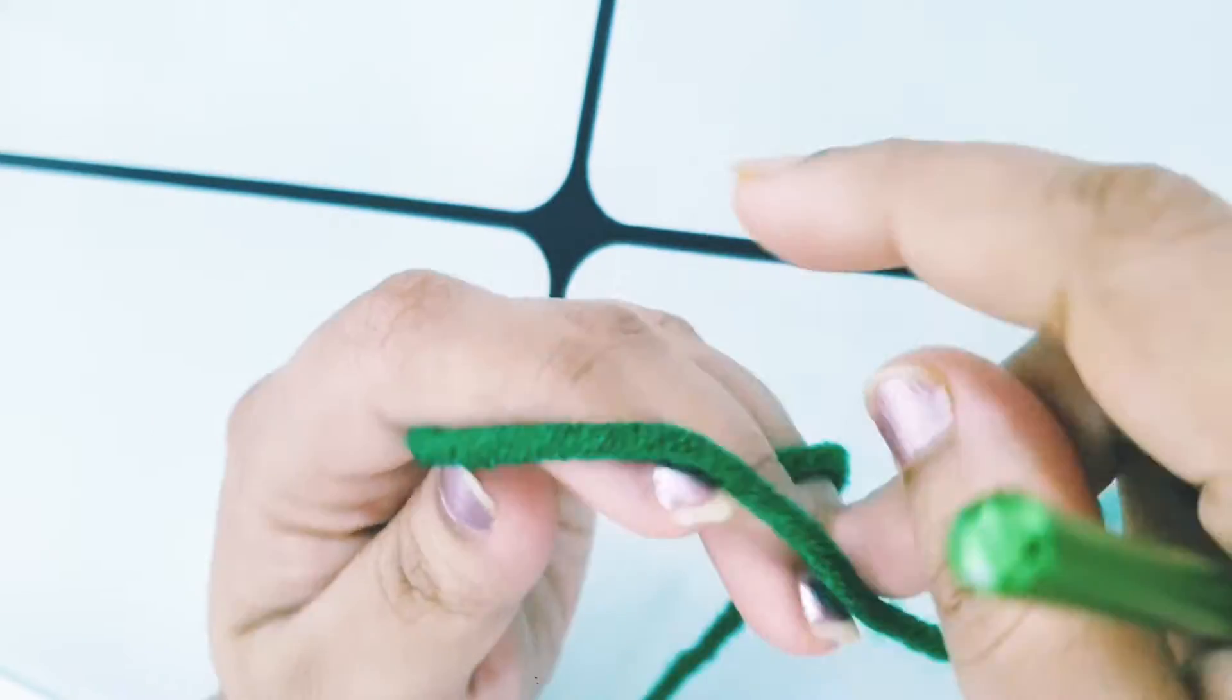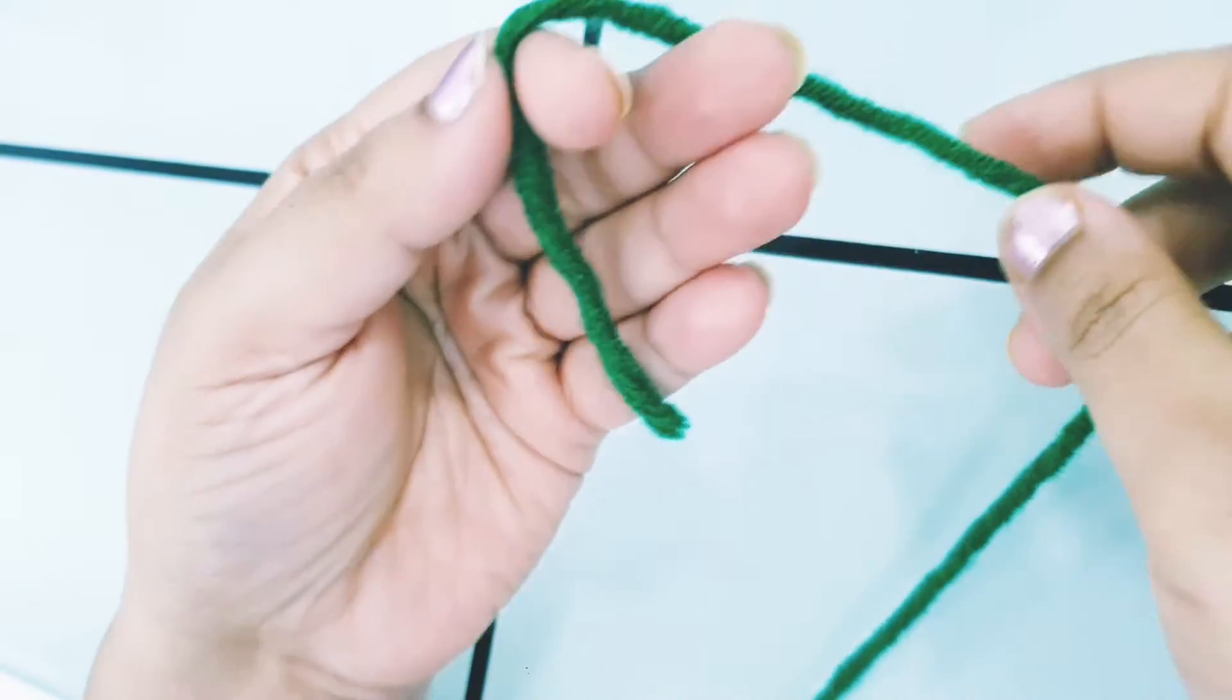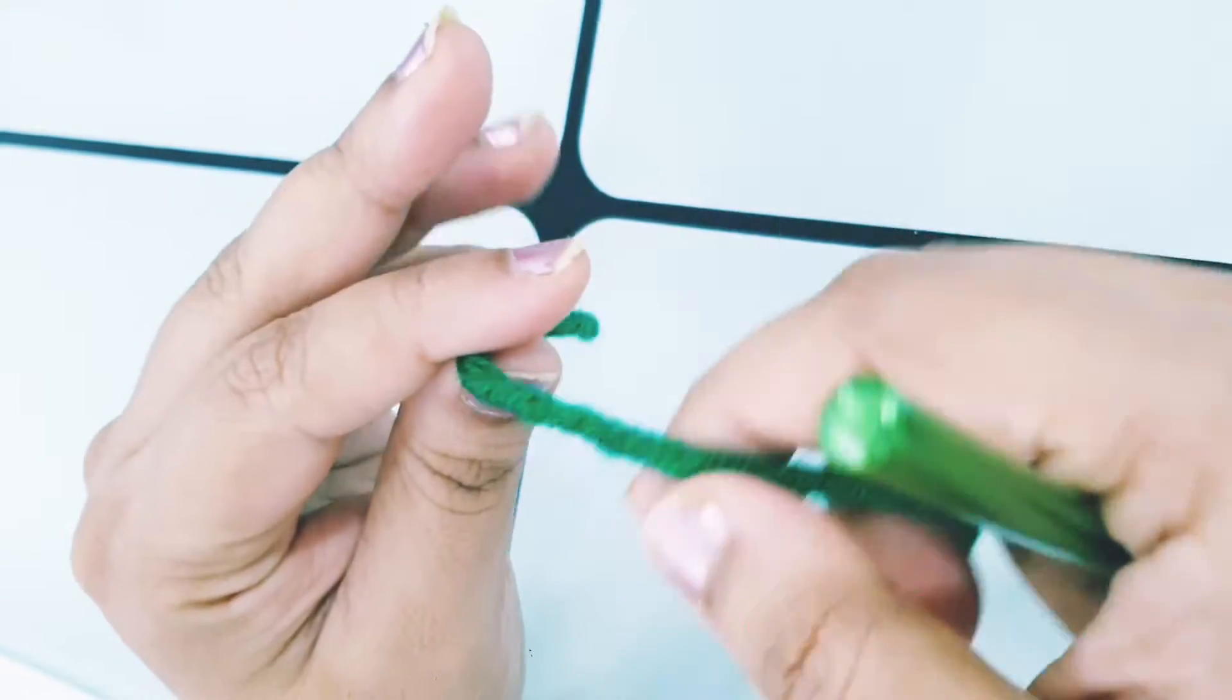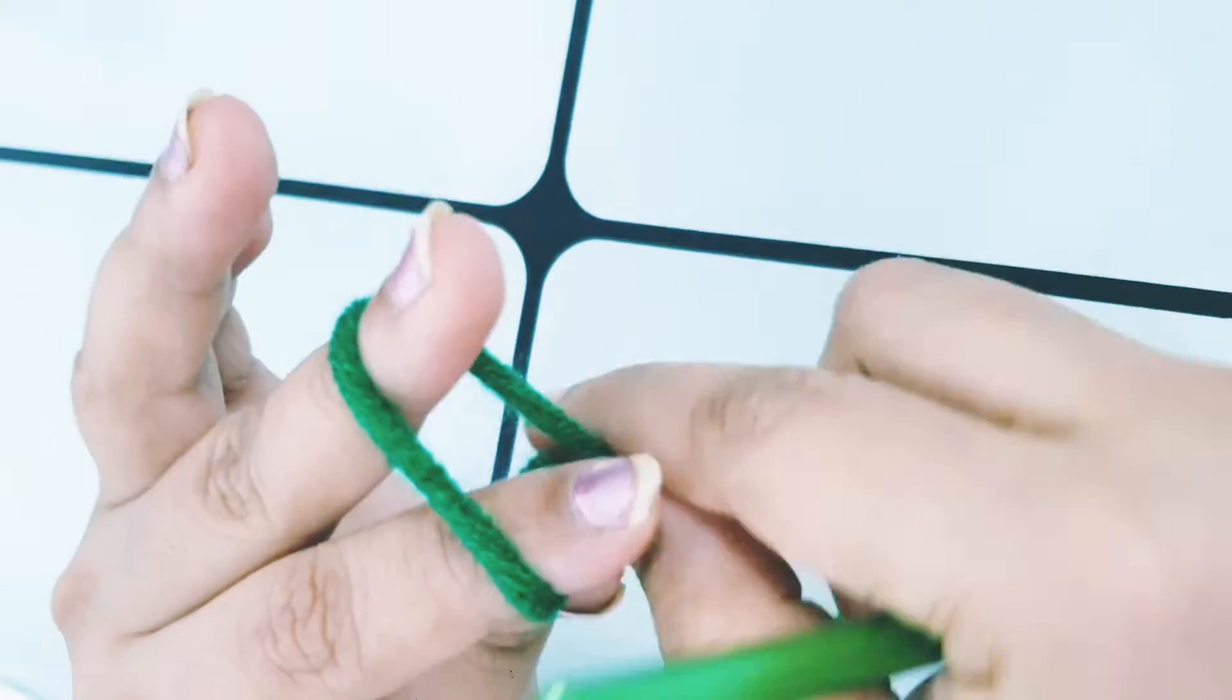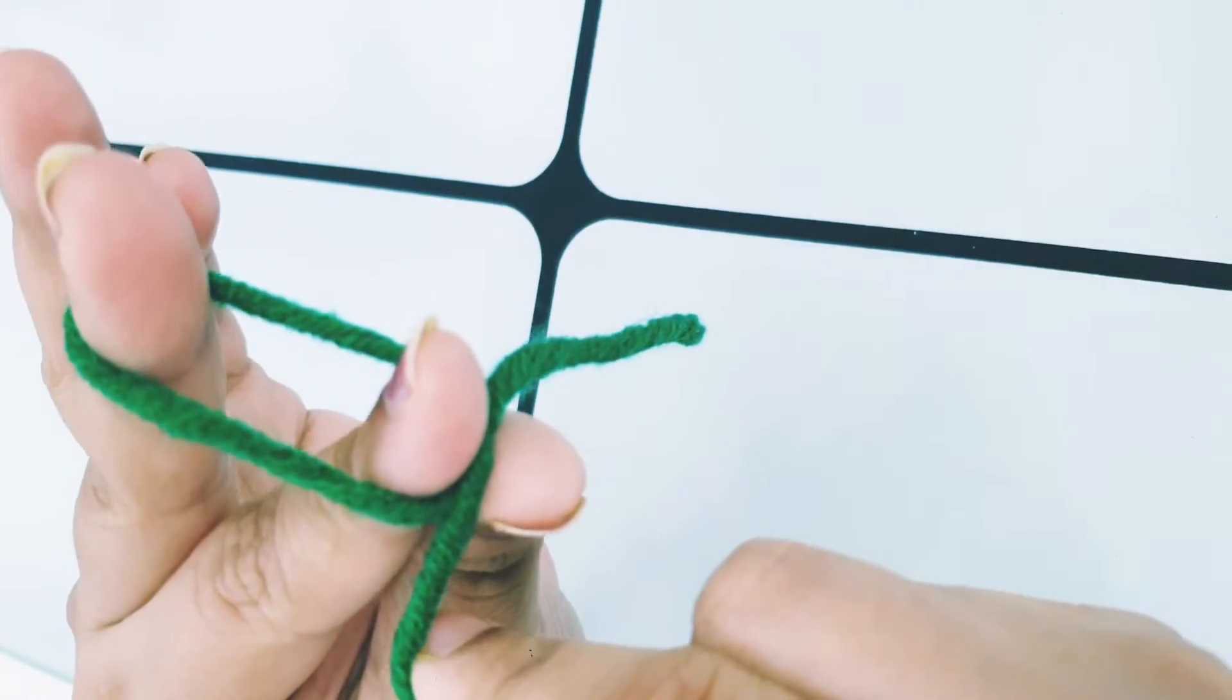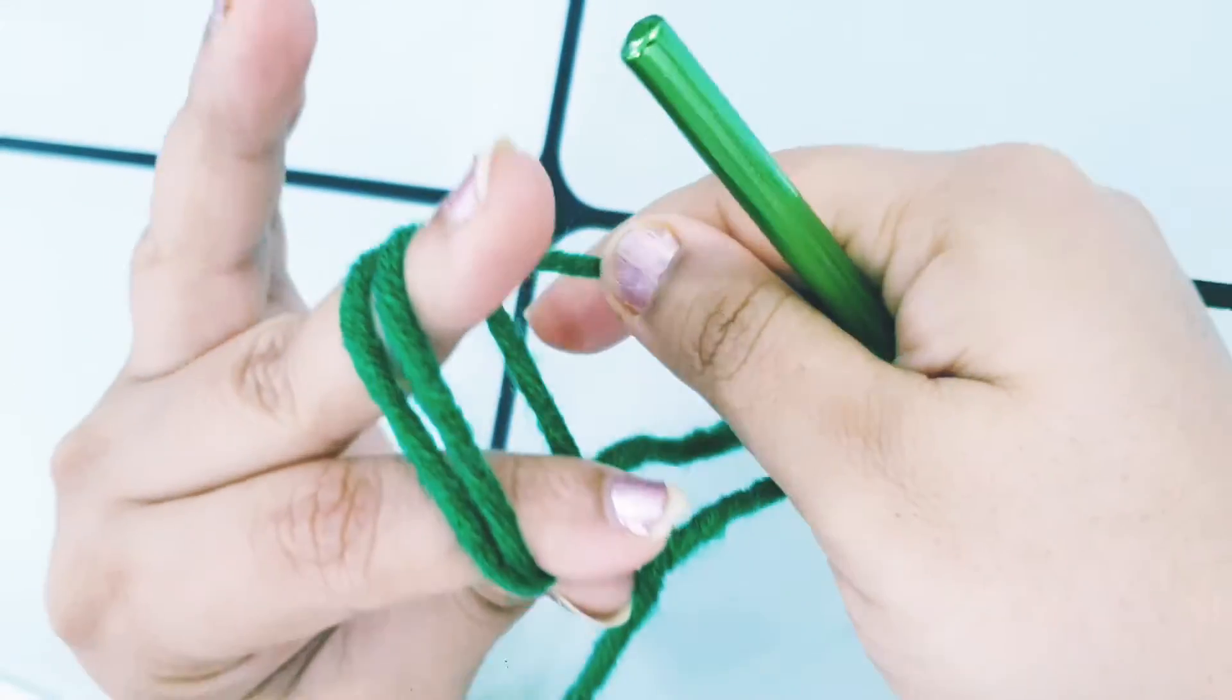To make the slip knot, hold your yarn this way and wrap it around twice. Wrap it around twice. First wrap it and pinch it here, pinch it here, and then wrap it again around your finger.